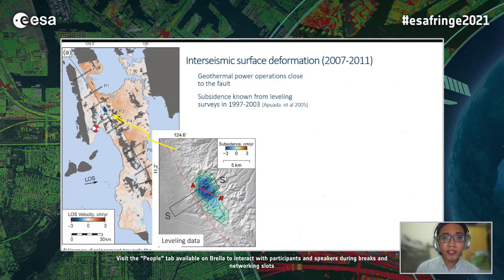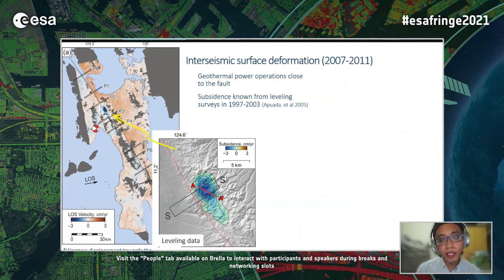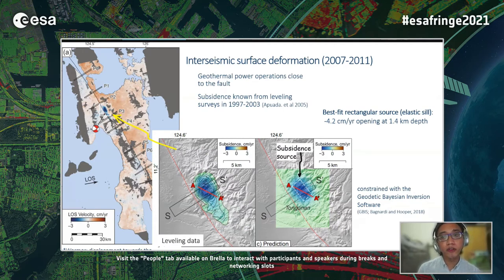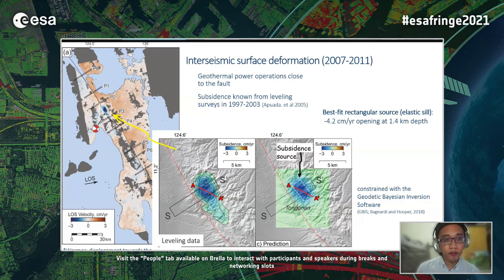Another important deformation signal is this blue elliptical area of subsidence just south of P2, related to a geothermal power plant near the fault, also known from leveling surveys. With the leveling data, we can model the subsidence source independently of the INSAR data. We find that a deflating rectangular source — or elastic sill — captures the signal well, with the data and prediction from the best-fitting model shown in the figures.